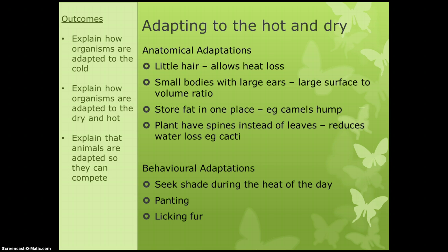Adaptations to the hot and dry. Anatomical adaptations include less hair — camels in particular don't have very much hair on their bellies because it allows them to lose lots of heat. For heat, we have the surface to volume ratio again, but animals want to have small bodies and often have big ears. Think elephants — they live in hot places because that gives them a large surface to volume ratio. It's like being in bed and very warm and sticking your arm or leg out from under the covers to lose a bit of heat.